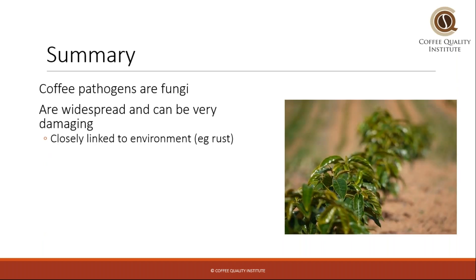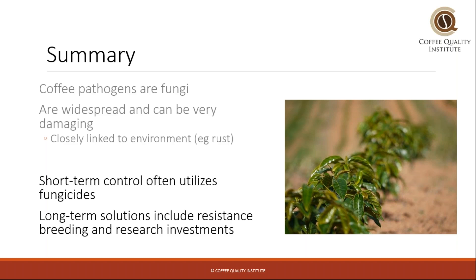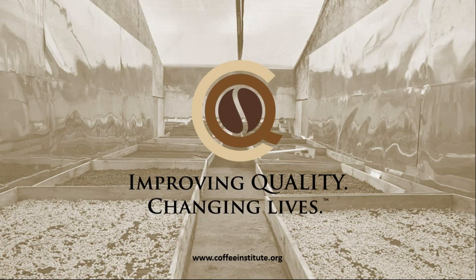To wrap up our mini seminar on coffee pathogens: we've seen that coffee pathogens are pretty exclusively fungi, widespread and potentially very damaging. Some are closely linked to the environment — like rust — while others, like leaf spot, may not be that damaging. Short-term control often utilizes fungicides, and longer-term solutions include breeding for disease resistance and other research investments like looking for biological controls. That concludes our mini seminar. If you'd like to learn more about CQI, please visit our website.